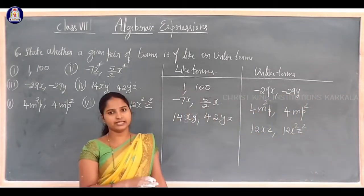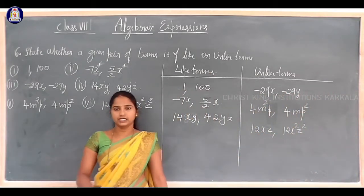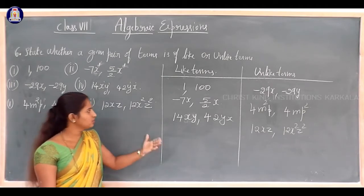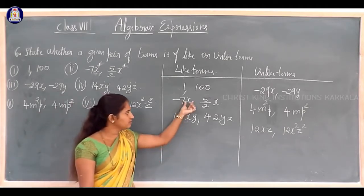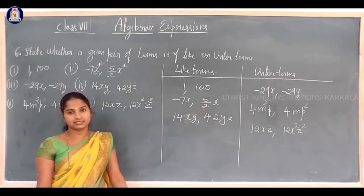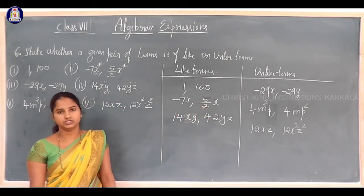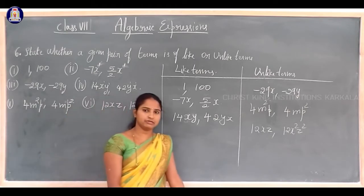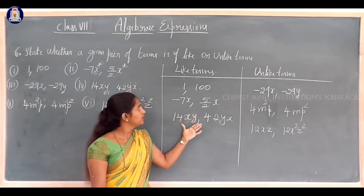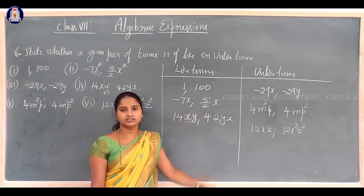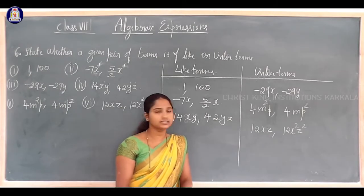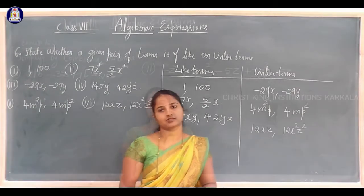To summarize how to identify like and unlike terms: first check whether variables and exponents are the same or different. If both are the same, they are like terms; if different, they are unlike terms.